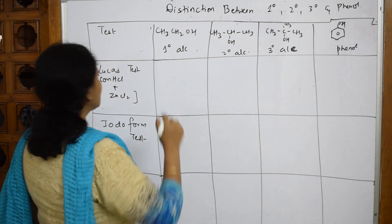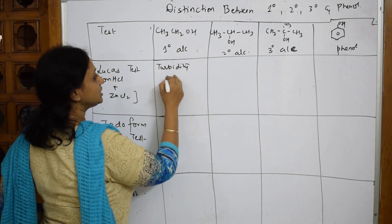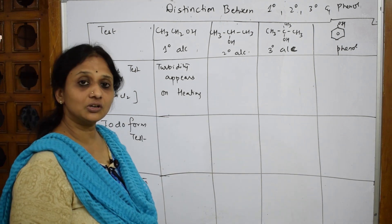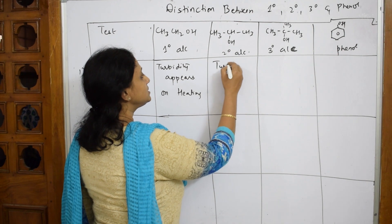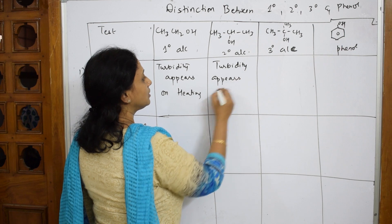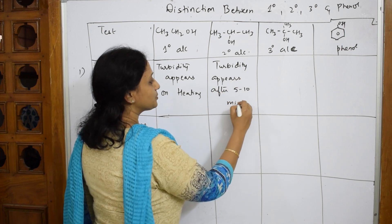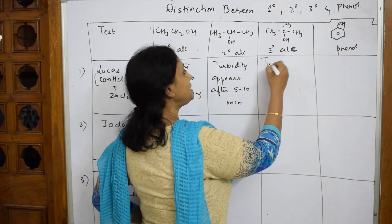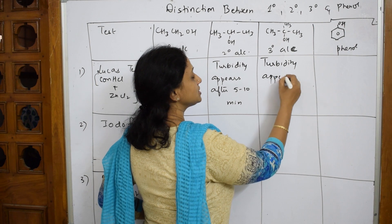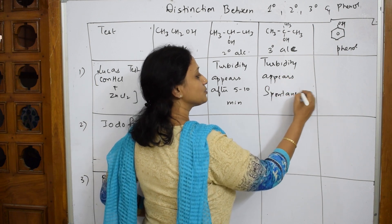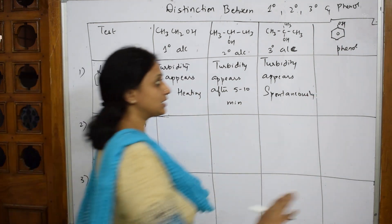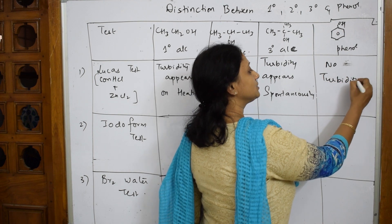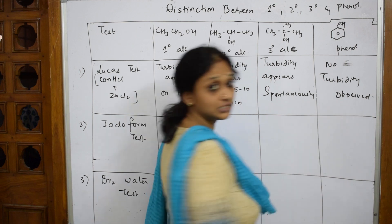For primary alcohol, turbidity appears on heating only. For secondary alcohol, turbidity appears after 5 to 10 minutes. For tertiary alcohol, turbidity appears spontaneously — as soon as you add the tertiary alcohol with HCl and ZnCl₂, turbidity appears immediately. This is the main differentiating point. For phenol, it will not respond to Lucas test — no turbidity observed.